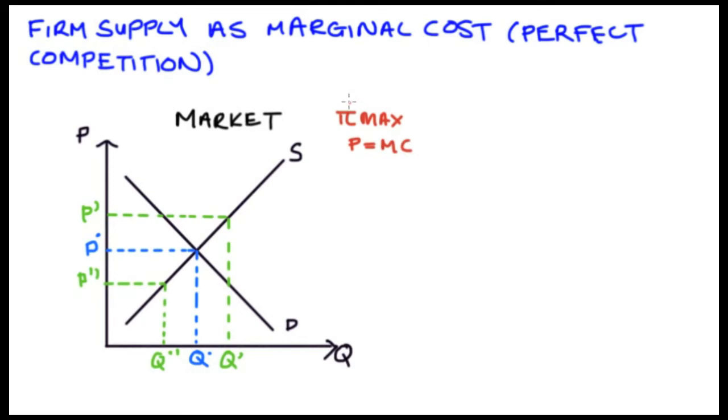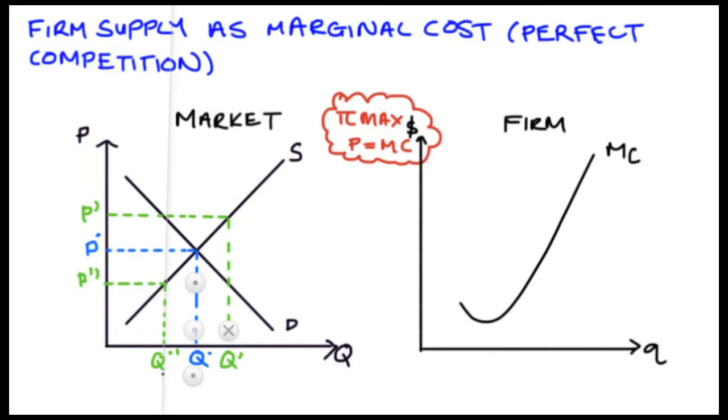So here I've just drawn our marginal cost curve here and let's apply this profit maximization rule to this market. Let's just say it's in equilibrium at p star. Well we know the firm's price takers so we know the firm is going to see this price and because it's a profit maximizing firm it's going to set its quantity that it's going to produce such that price is equal to marginal cost.